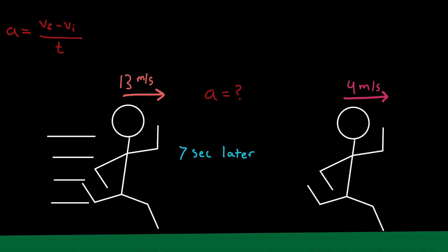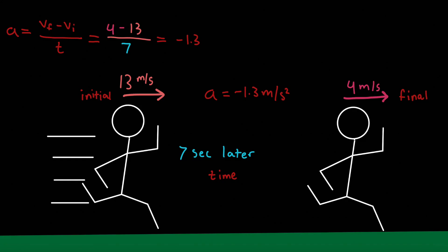Now what if our runner slows down from 13 meters per second to 4 meters per second in 7 seconds? Our final velocity is 4 m/s, initial velocity is 13 m/s, and time is 7 seconds. We subtract 4 from 13 and divide by 7 to get negative 1.3 meters per second squared. The negative means the acceleration is opposite to the direction of velocity, which results in slowing down.